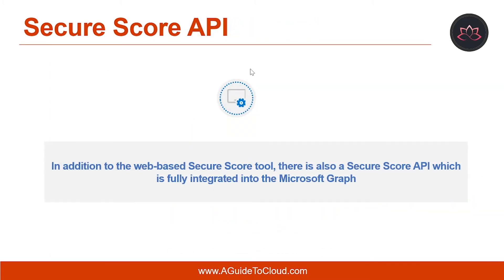In addition to the web-based Secure Score tool, there is also a Secure Score API, which is fully integrated into the Microsoft Graph. This allows you to customize where you would like your organization's score to be seen, aligning a dashboard to show all pertinent information. Once the Secure Score API has been set up, PowerShell scripts are used to retrieve the necessary data from Secure Score.